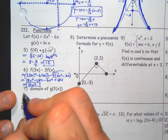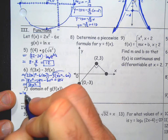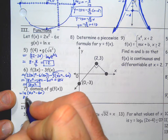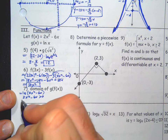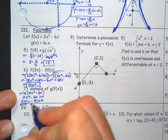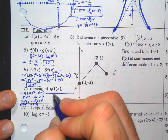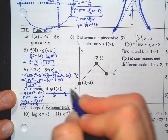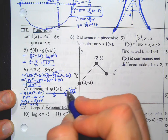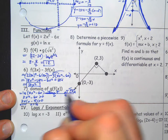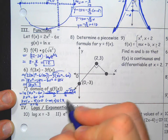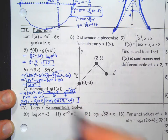G of f of x: natural log is on the outside, 2x squared minus 6x is on the inside. That inside expression needs to be positive, so factor it: 2x(x minus 3). So x equals 0 and x equals 3. Do a line check with open dots; test x equals 4, which makes it positive — true, false, true. The domain is negative infinity to 0, union 3 to positive infinity.